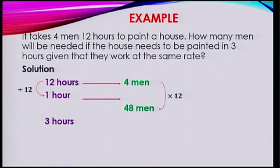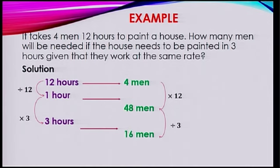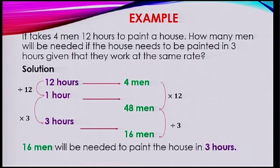So in 3 hours — we want to become 3, we need to multiply by 3. If we multiply by 3 here, we need to divide the other quantity by 3. So that's 48 divided by 3, which is 16 men. Therefore, 16 men will be needed to paint the house in 3 hours.